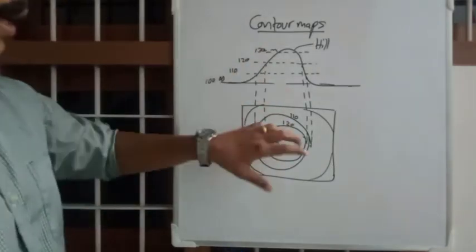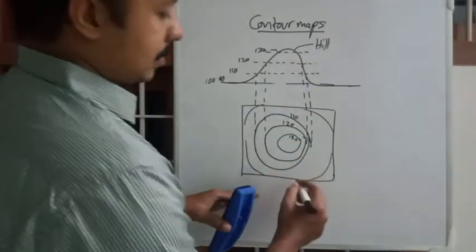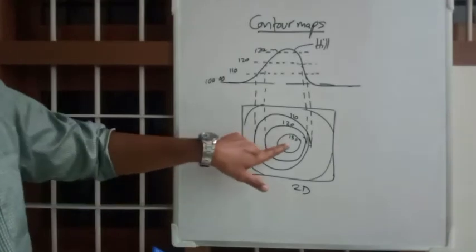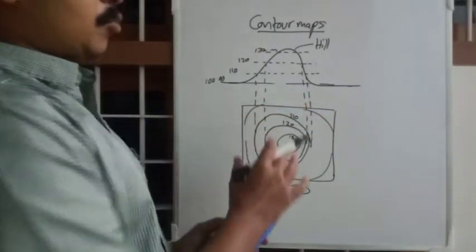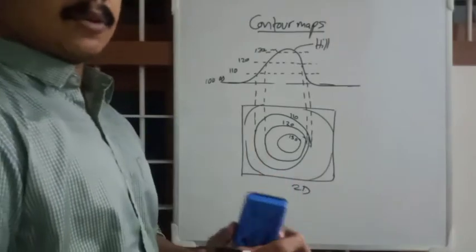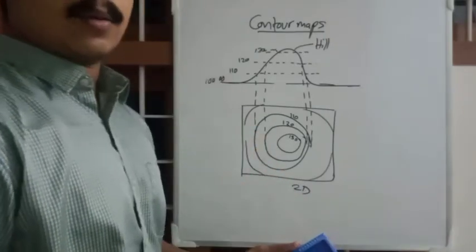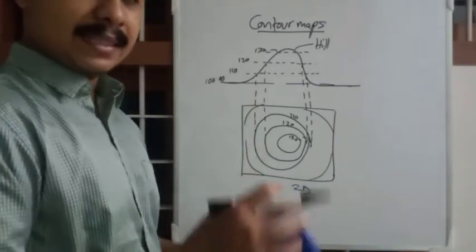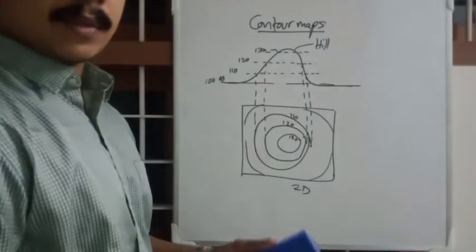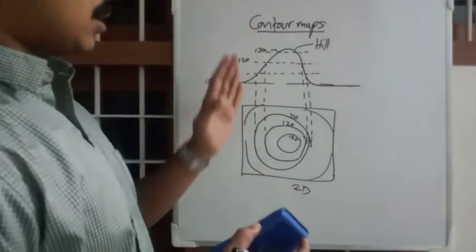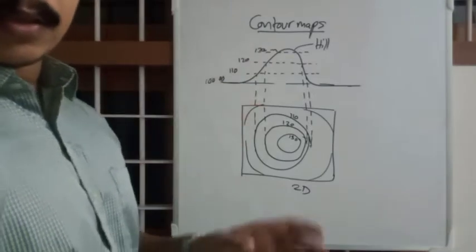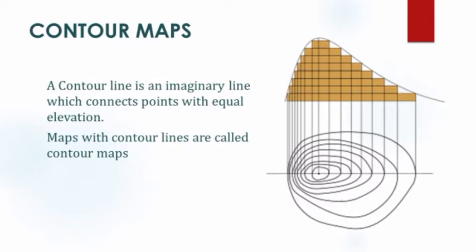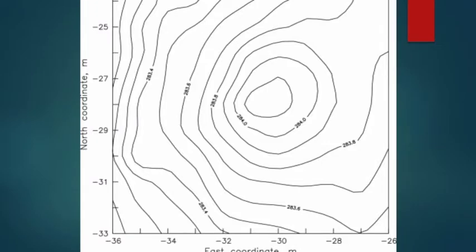So you can understand the topography of this hill from a 2D map. You can fairly understand this portion will be the most elevated portion and this portion will be the lowest point of the area. Contour maps are widely used in surveying for the construction of roads, canals, dams, and all along engineering projects. Contour maps are very useful for finding sites, calculation of earthworks, cutting and filling of land, etc.